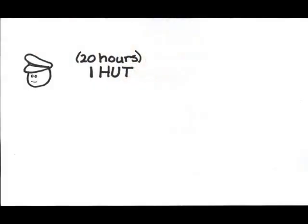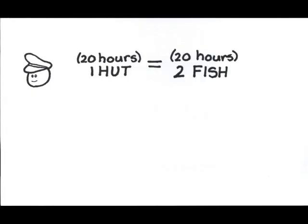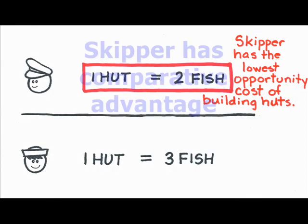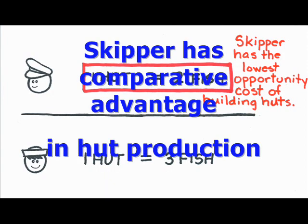Well, let's start by taking a look at Skipper. Every hut he builds takes 20 hours. Had he used the 20 hours on fishing, he could have produced two fish dinners. So Skipper's opportunity cost of producing one hut is that he sacrifices two fish dinners. What about Gilligan? He takes 45 hours to build a hut, in which time he could have produced three fish dinners. This means that Skipper has comparative advantage in hut production.